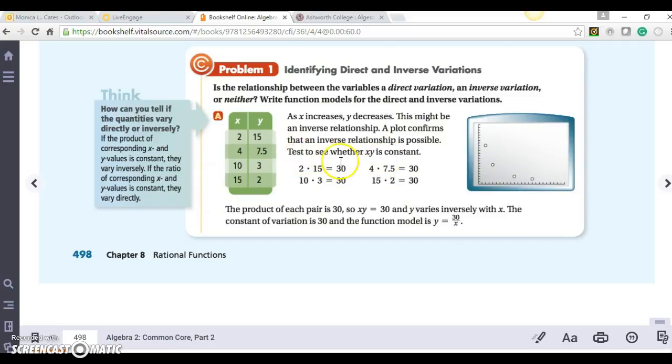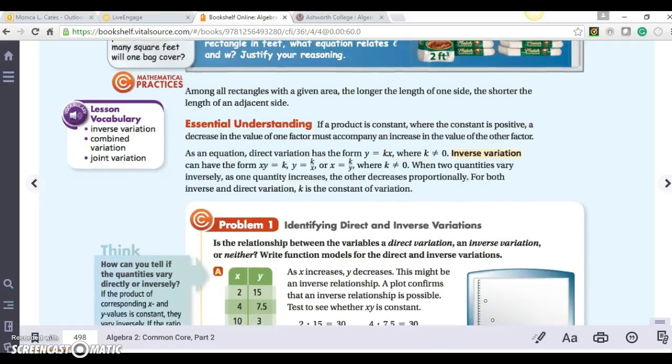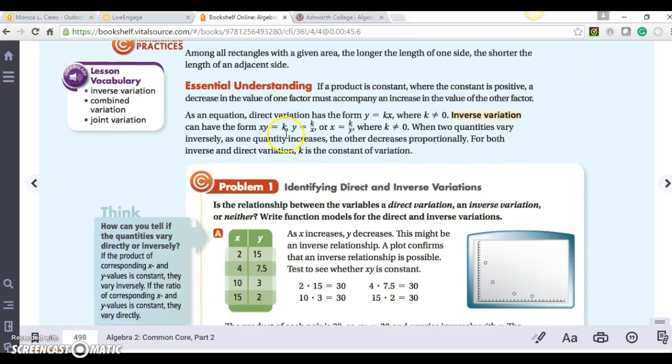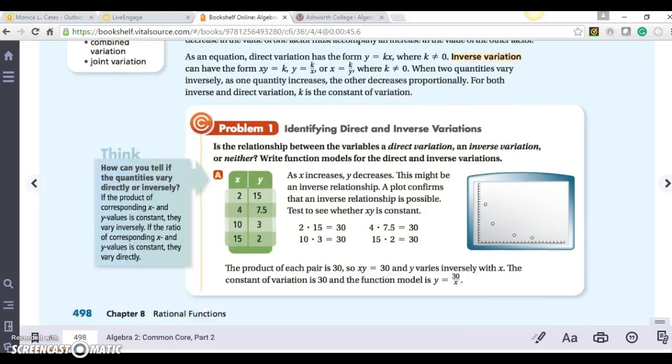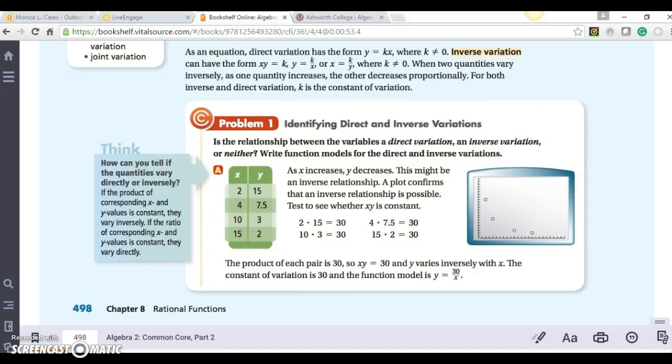Now we want to see if this k value is constant. Because k is constant as long as it's not equal to zero, we're going to multiply these values. 2 times 15 is 30, 4 times 7.5 is 30, 10 times 3 is 30, and 15 times 2 is 30. Therefore, it is an inverse variation, and so we can rewrite it as y equals 30 over x, or xy equals 30.